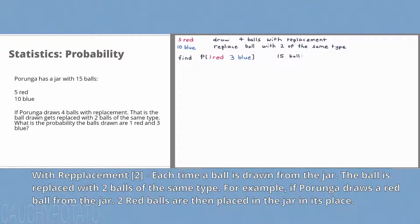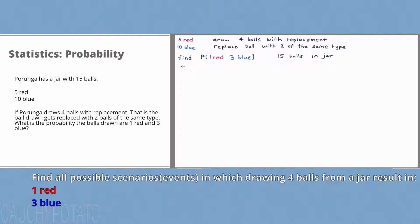So what kind of scenarios when drawing 4 balls gets us 1 red and 3 blue? Let's write these possible scenarios down. I could draw the first ball red and the next 3 blue. I could draw the first blue, the second red, and the last 2 blue. I could draw the first 2 blue, the third red, and the fourth blue. I could draw the first 3 blue and the fourth ball red. These are all the possible scenarios for drawing 1 red and 3 blue balls.